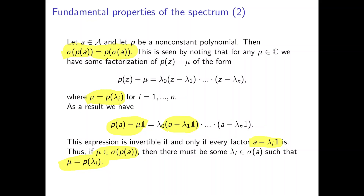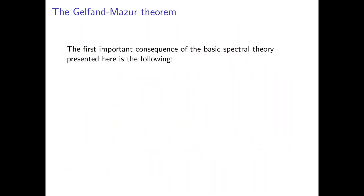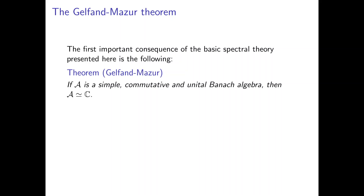Let's go over one important consequence of this basic spectral theory we have developed so far. It is the following: if we have a simple, commutative, and unital Banach algebra, then this algebra A is going to be isomorphic to the set of complex numbers. This is known as the Gelfand-Mazur theorem. It can be stated in a few different ways, but we're going to state and use it like this later on when talking about Gelfand theory for general Banach star algebras. This proof is actually not that complicated once you have the power of spectral theory.